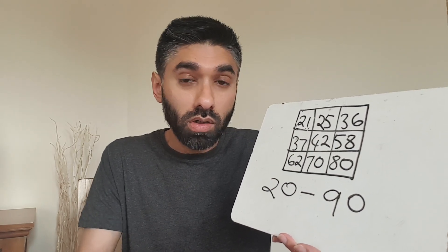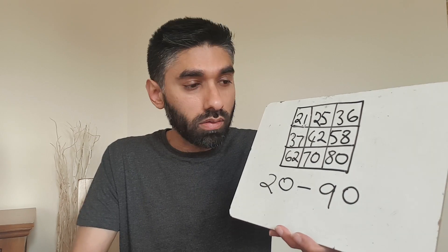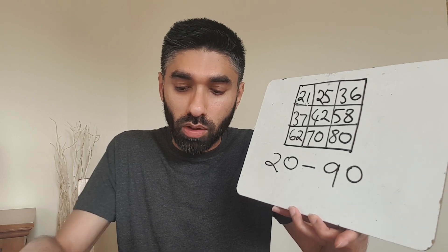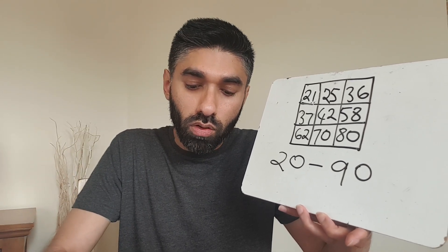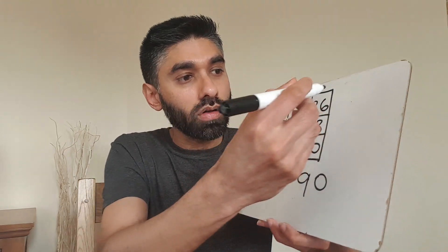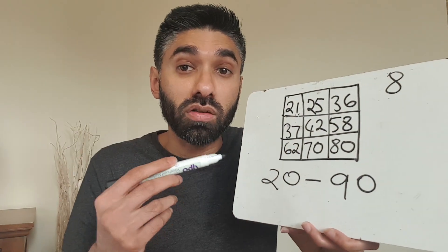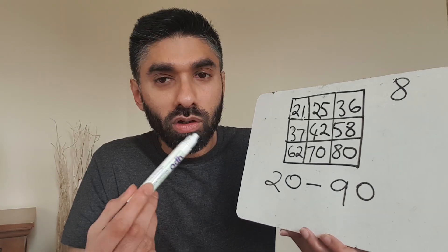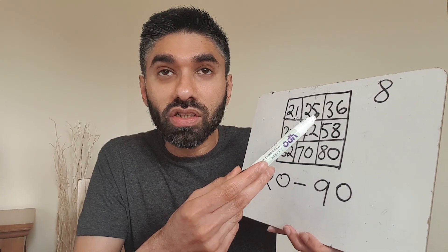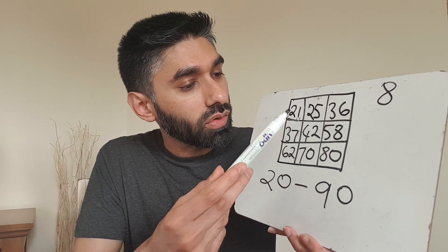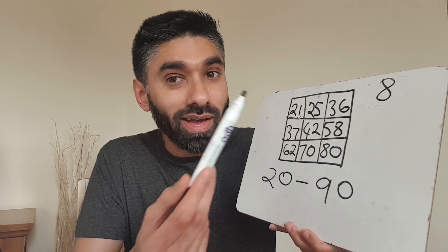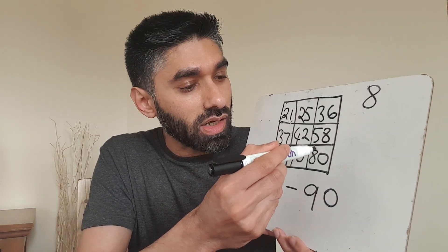Let's start! First roll: four and four - four and four is eight. So the number is eight. If you've got any multiples of eight on your grid, cross them out. Eight times 10 is 80 - I can cross out 80. One number crossed out so far.